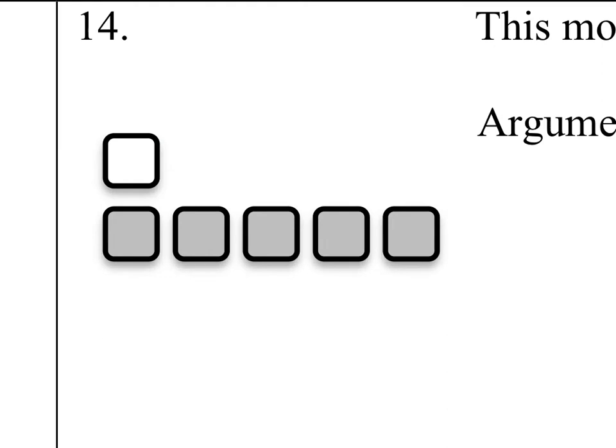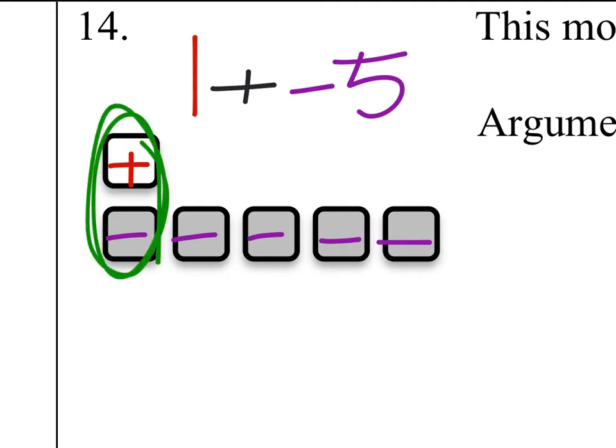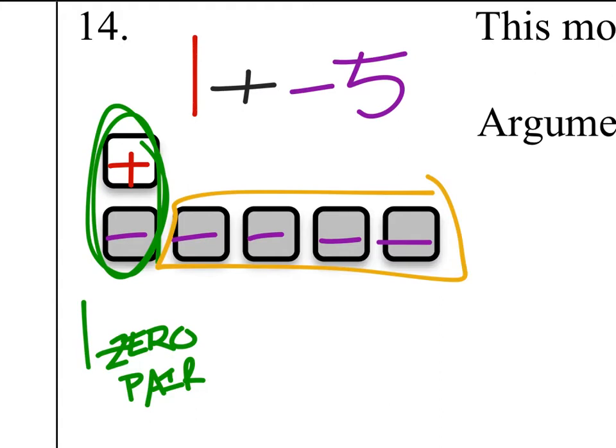So it's number 14 on the worksheet. What does this model represent? Let's go ahead and tag on our signs for these. This one's a positive and we've got one, two, three, four, five negatives. So really we've got one and then we'll add on these five negatives like this. So what do we end up with? Well, we've got this zero pair right here. That's one zero pair. And what do we have over here? Looks like we've got four negative ones, meaning that this all will equal a negative four.